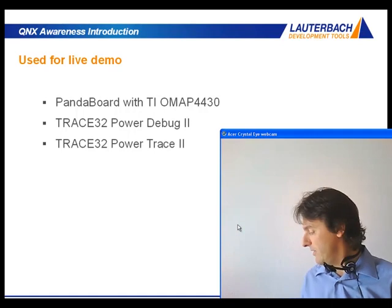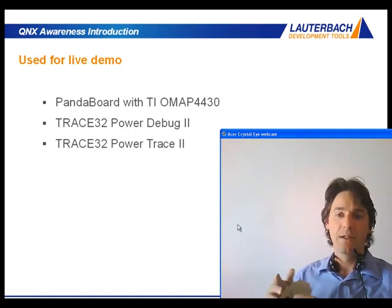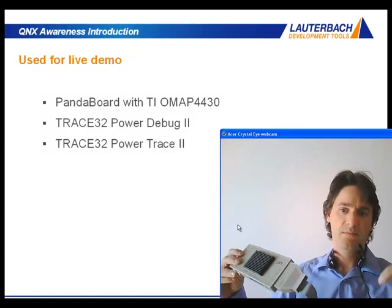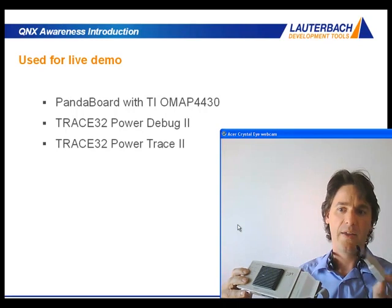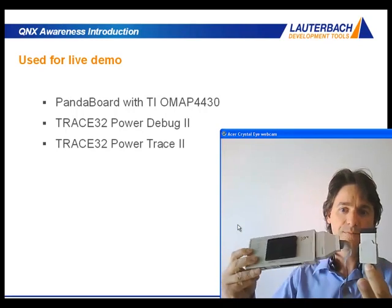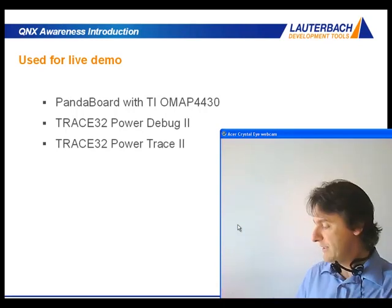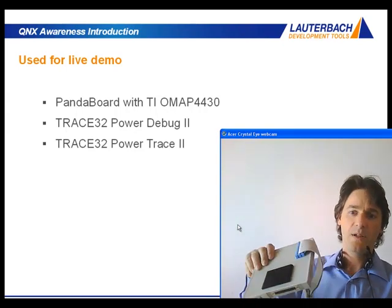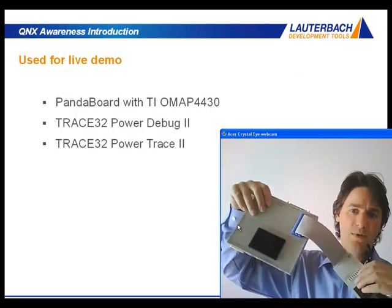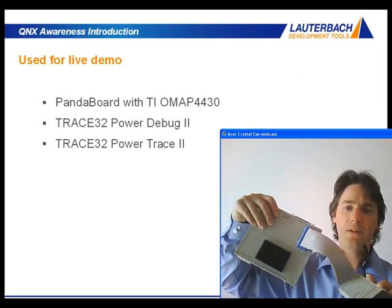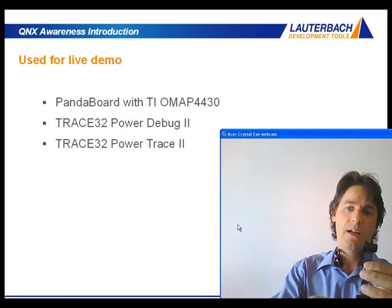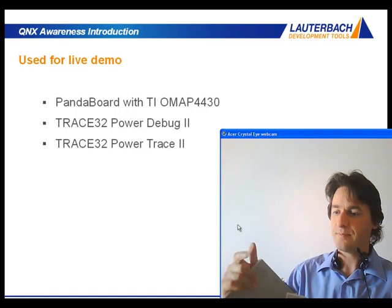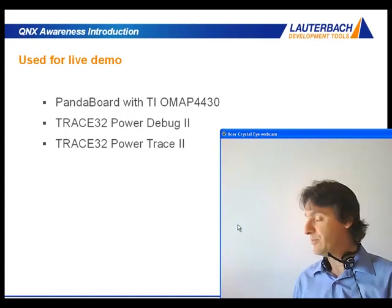For debugging, we will use our PowerDebug2 interface — looks like that — with a JTAG cable on it, which is then connected to the target. For real-time trace, we will use a PowerTrace2 system, which looks like that — a little bit bigger than the other one. This is the connection to the ETM port for catching real-time traces. So that's what we will use for our systems.